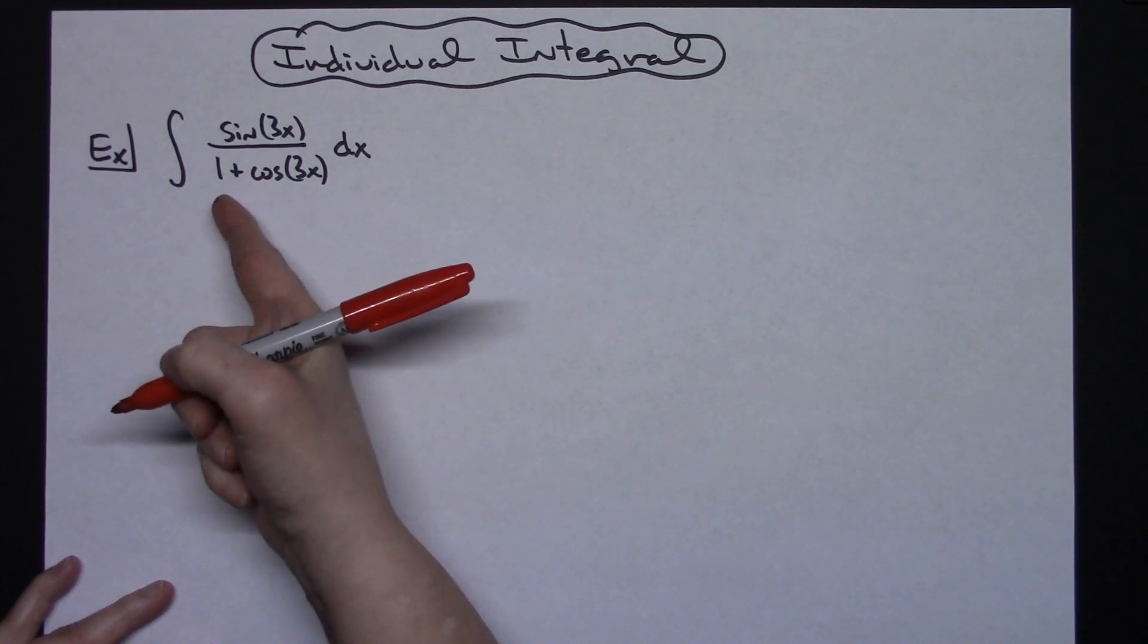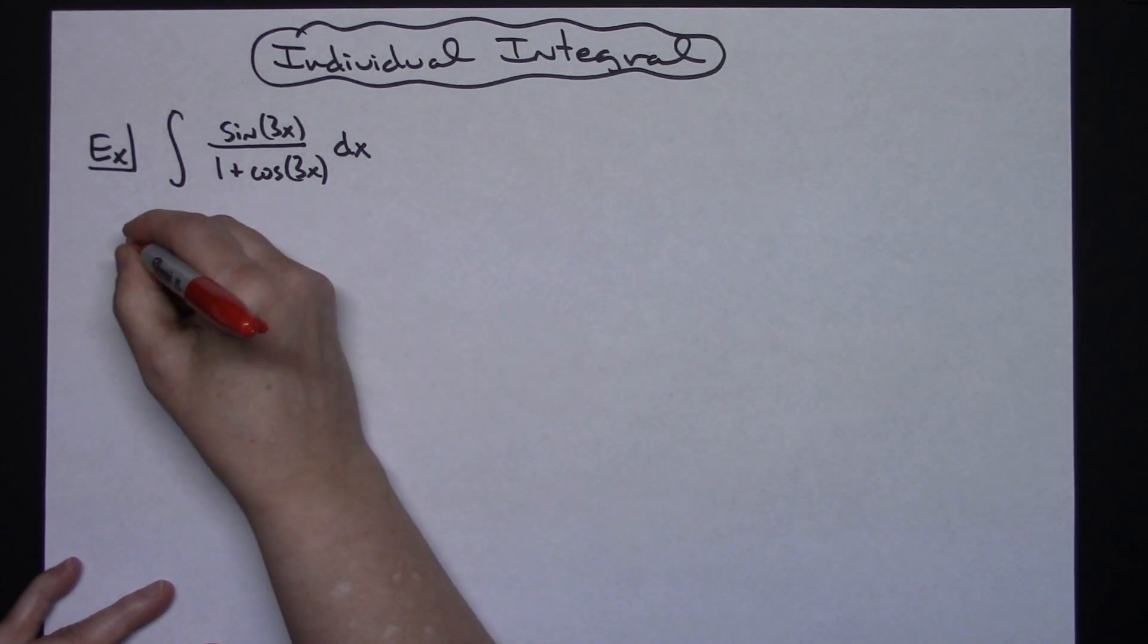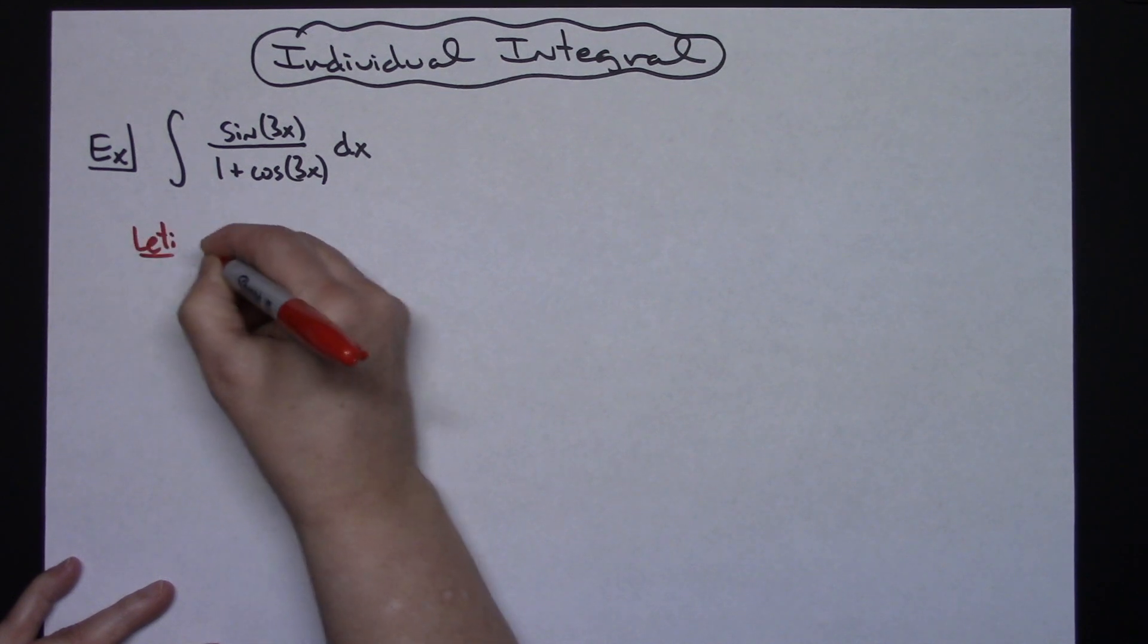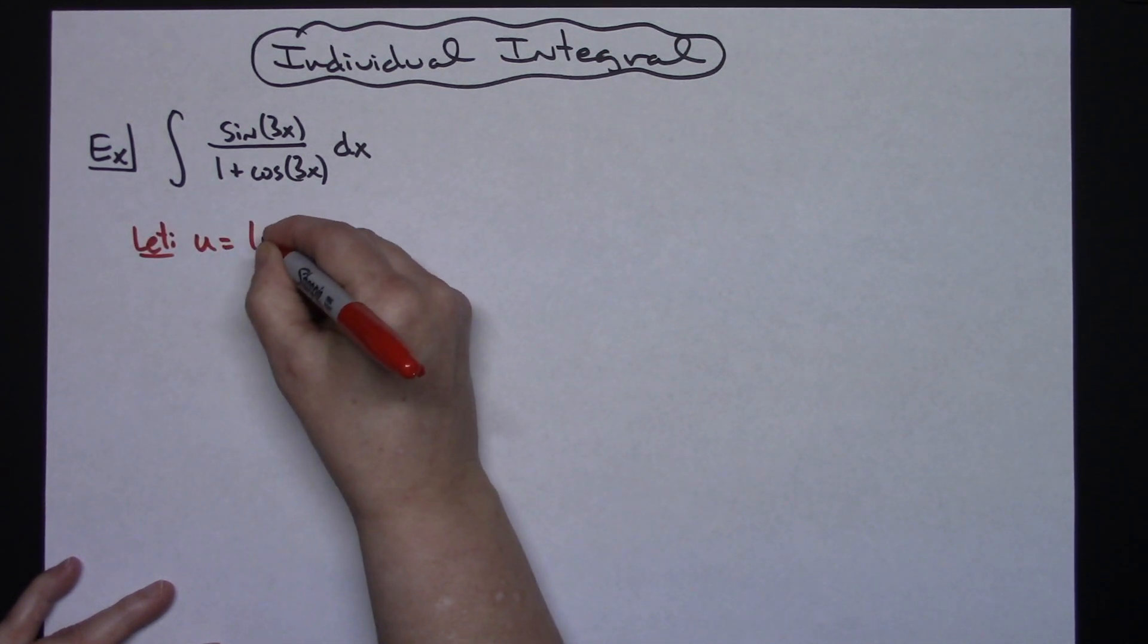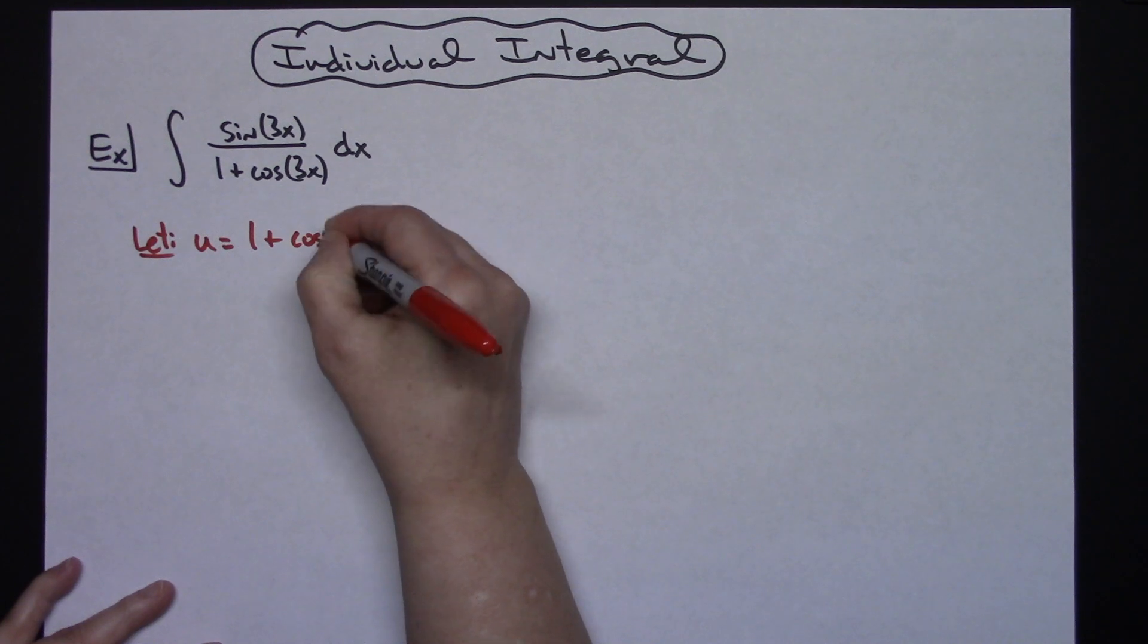I'm going to start by letting u be the entire denominator. So we're going to let u equal 1 plus cosine 3x.